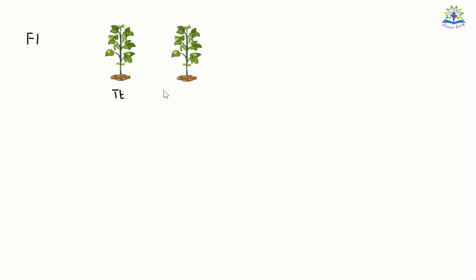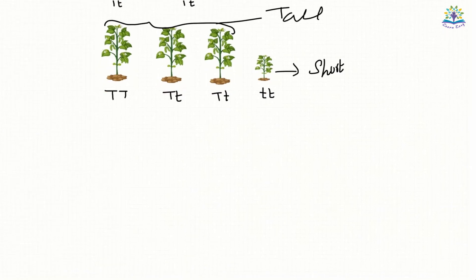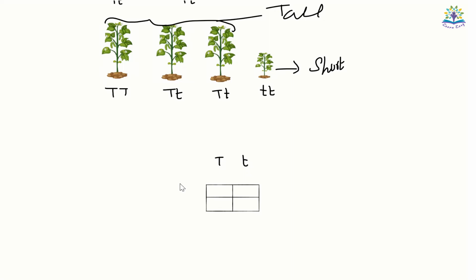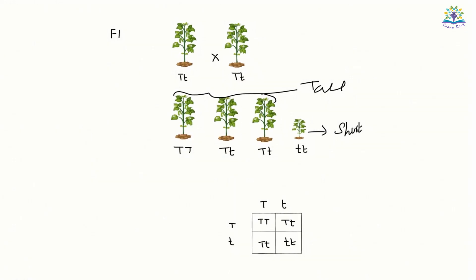In the next stage of this experiment, Mendel cross-pollinated two plants from the F1 generation. The F2 generation thus formed had offsprings with different genotype and phenotype. Each parent of the F1 generation has the genotype capital T, small t, so each gamete receives either a tall allele or a short allele. After cross-pollination, there are four possibilities for the offspring. The phenotype ratio observed was 3:1 — that is, three of them are tall and one is short. The genotype ratio was 1:2:1 — one offspring was pure tall, two had both tall and short genes, and one was pure short.